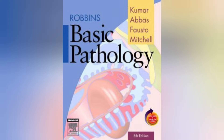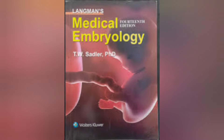For pathology, you can use Robbins Basic Pathology. For embryology, you can use Langman's Medical Embryology. So for first year, the subjects are anatomy, physiology, histology, biochemistry, and pharmacology.